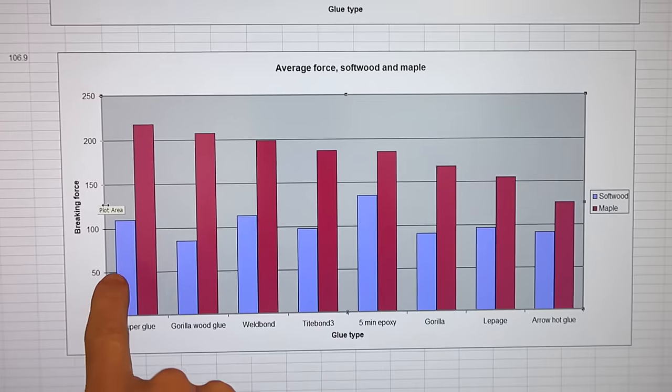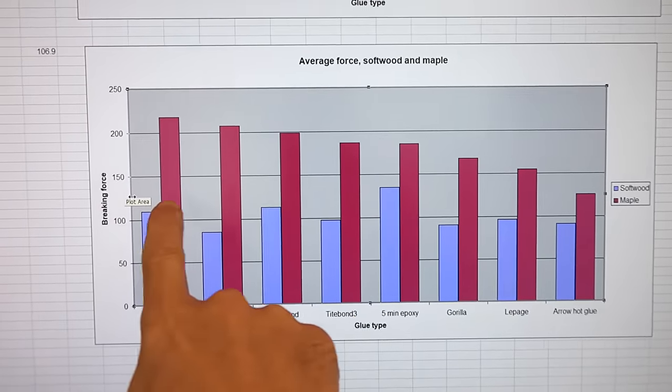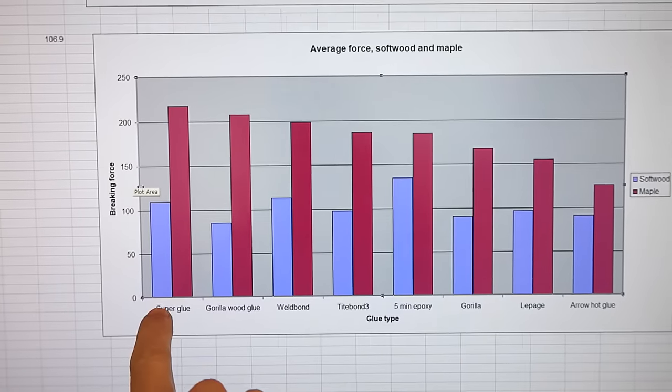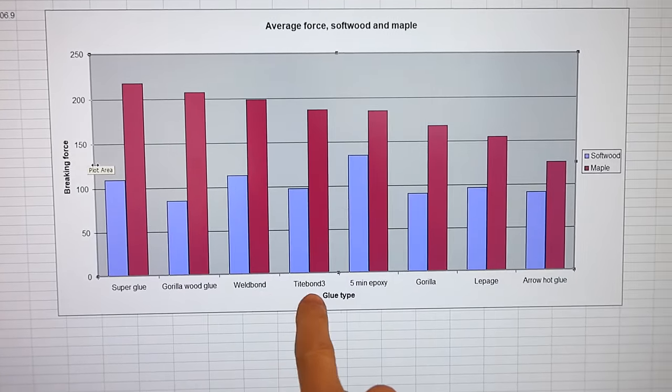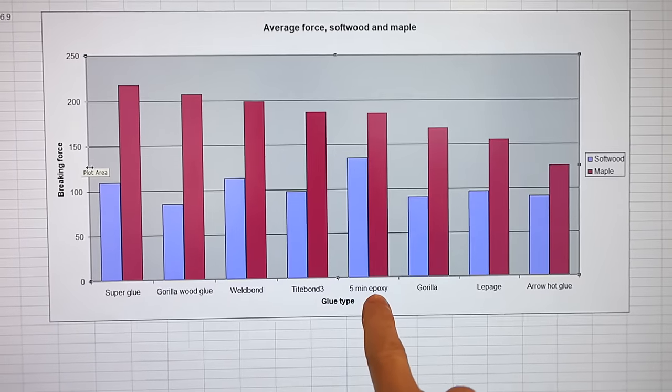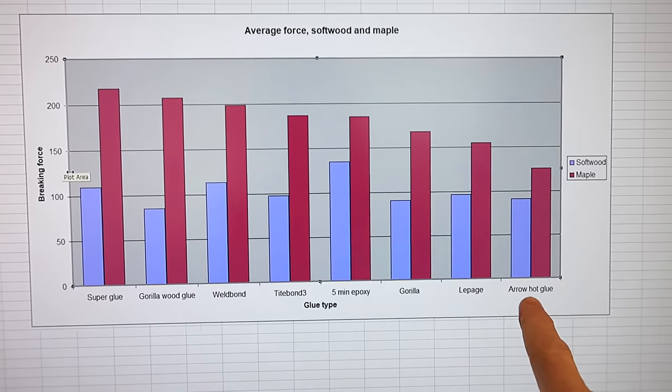This is softwood and hardwood tests. And you can see all these, a lot of these nearly doubled. And the best one with the hardwoods was the superglue followed by gorilla wood glue, weld bond, tight bond three, five-minute epoxy, gorilla glue, LePage, and AeroBrand hot glue.